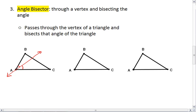We can look at the angle bisector of angle B. Again, we pass through the angle and cut the angle into two congruent smaller angles. And lastly, we have the angle bisector of angle C.